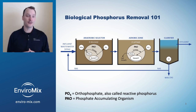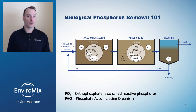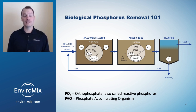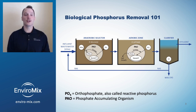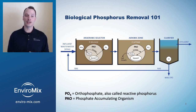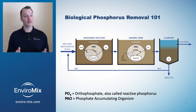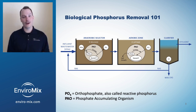Biological phosphorus removal is the process by which naturally occurring organisms in the wastewater accumulate phosphorus as they travel through the treatment plant. The microbes that carry the majority of the phosphorus are aptly named Phosphorus Accumulating Organisms, or PAOs. The process by which PAOs assimilate phosphorus and grow is critical to achieving EBPR.